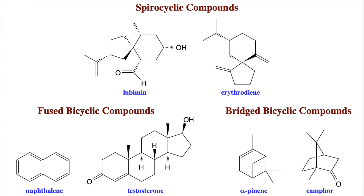Bicyclic compounds are incredibly important — they're found all over nature. Here are examples of each type. For spirocyclic compounds, we have lubimin, a naturally occurring compound found in various nightshade species like potatoes, tomatoes, and tobacco. It has powerful antimicrobial activity used by the plant to ward off infections. We also have erythrodiene, a spirocyclic compound found in certain species of Caribbean coral.